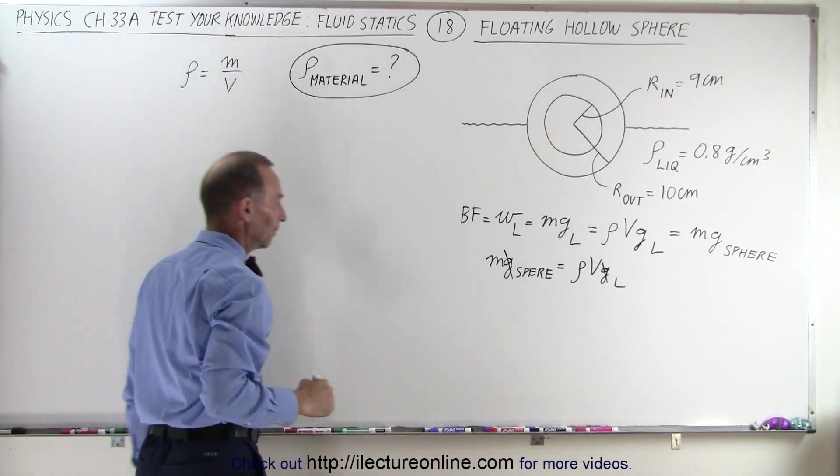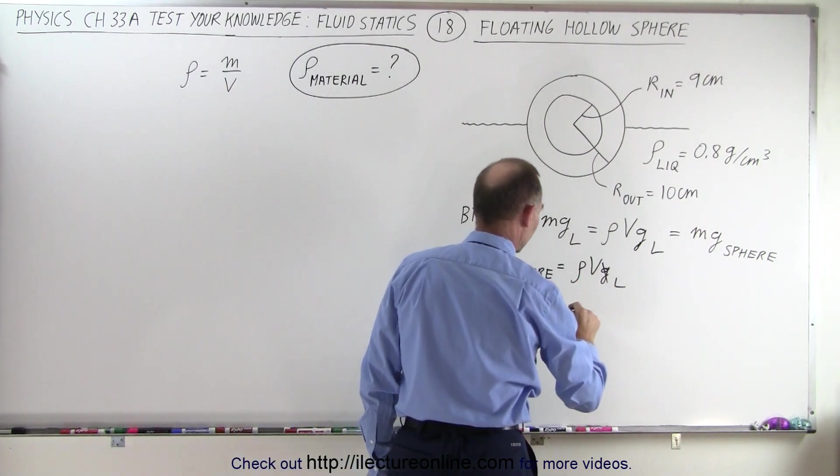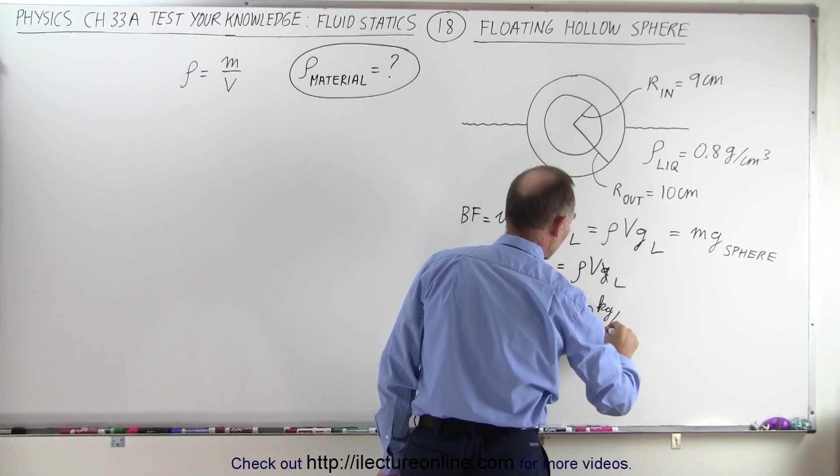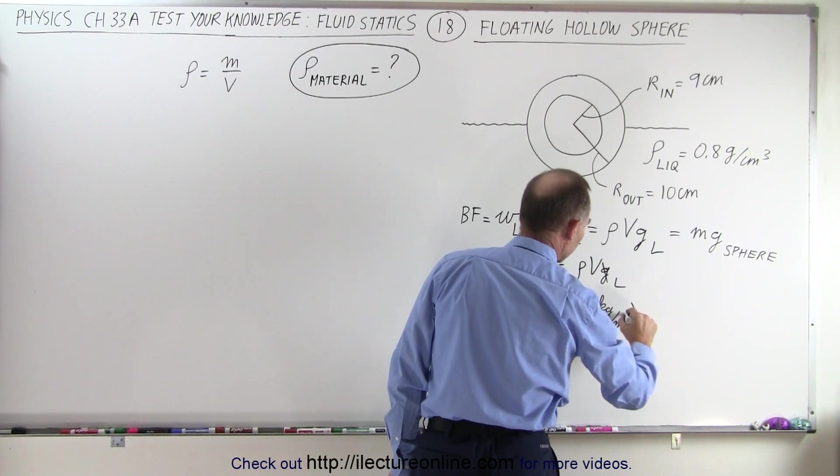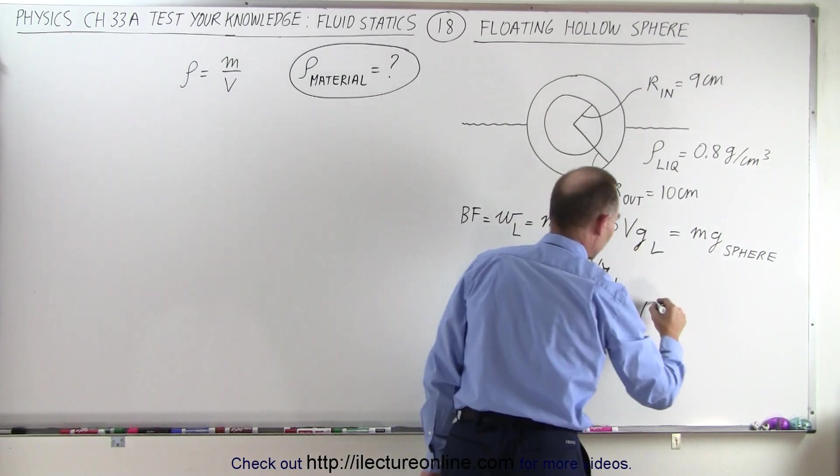That means the mass is equal to the density of the liquid, which is 800 kg per cubic meter. That should be a cube. And the volume would be half the volume of the sphere.